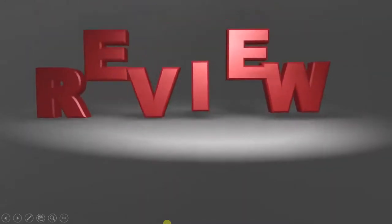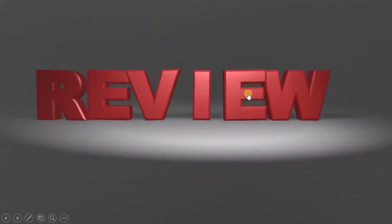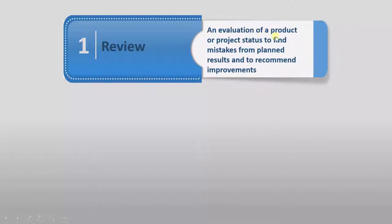In this lecture, I am going to brief you about the review process and the basics of it. We will start with the definition of review. It is nothing but an evaluation of a product or project status to find mistakes from planned result and to recommend improvements. When you are doing a review, you have two objectives: the first is to find mistakes, and the second is to give any recommended improvements required for that particular document.